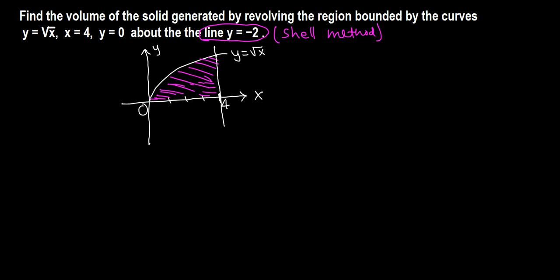We want to revolve this area about the line y equals negative 2. Let's find when x equals 4: y equals root 4 equals 2. So this is in fact 2. We want to revolve this about line y equals negative 2, so negative 1, negative 2. Here is the line y equals negative 2. We want to revolve this region about this line.